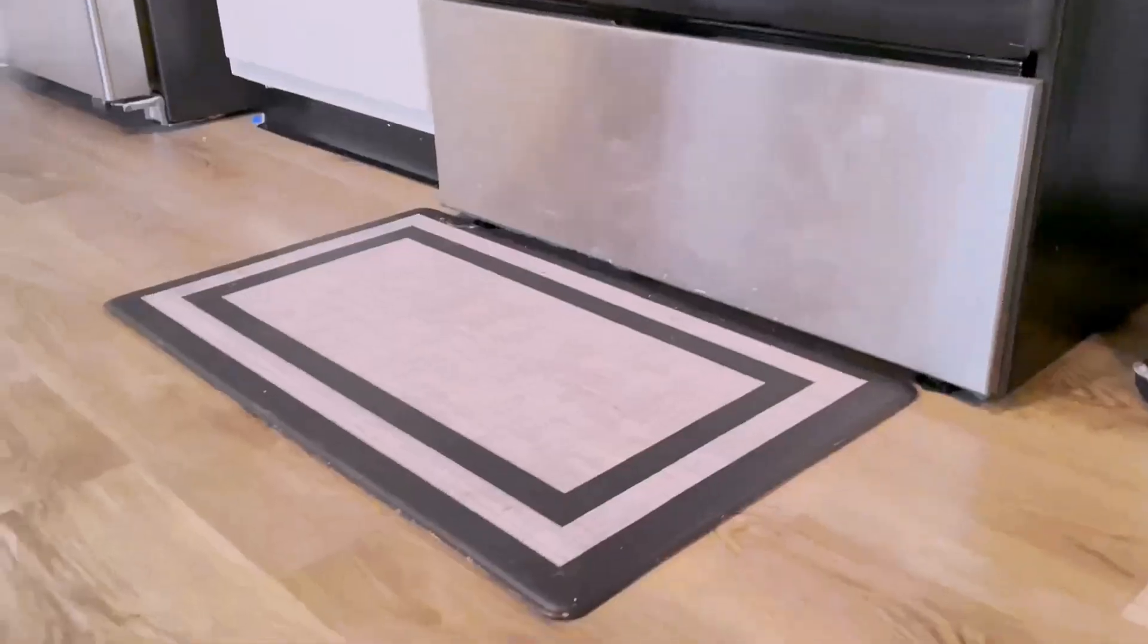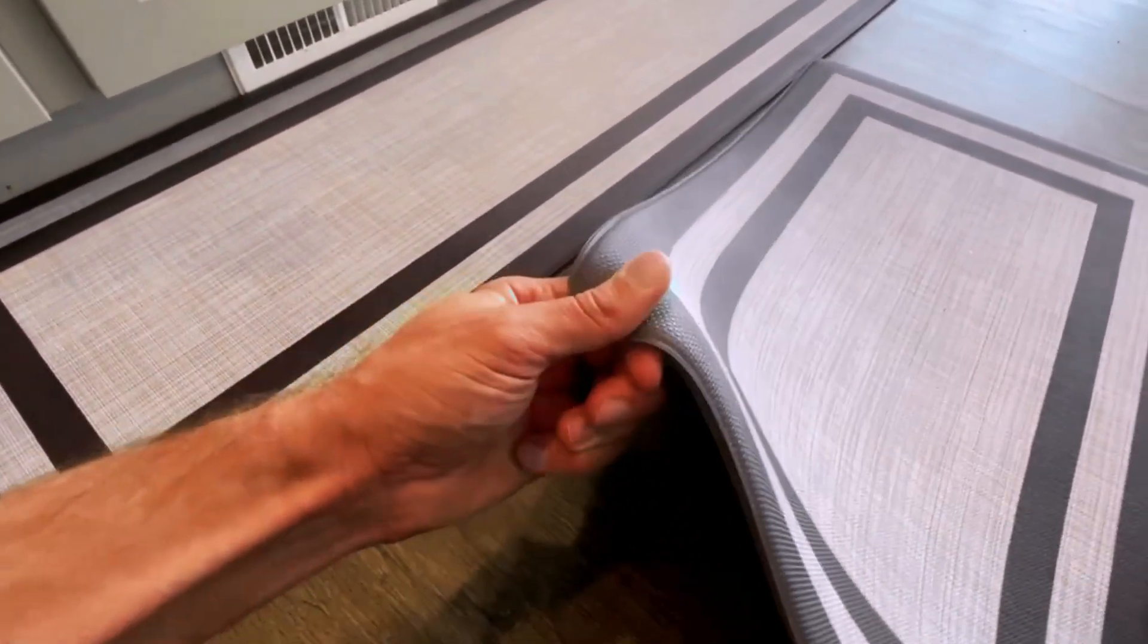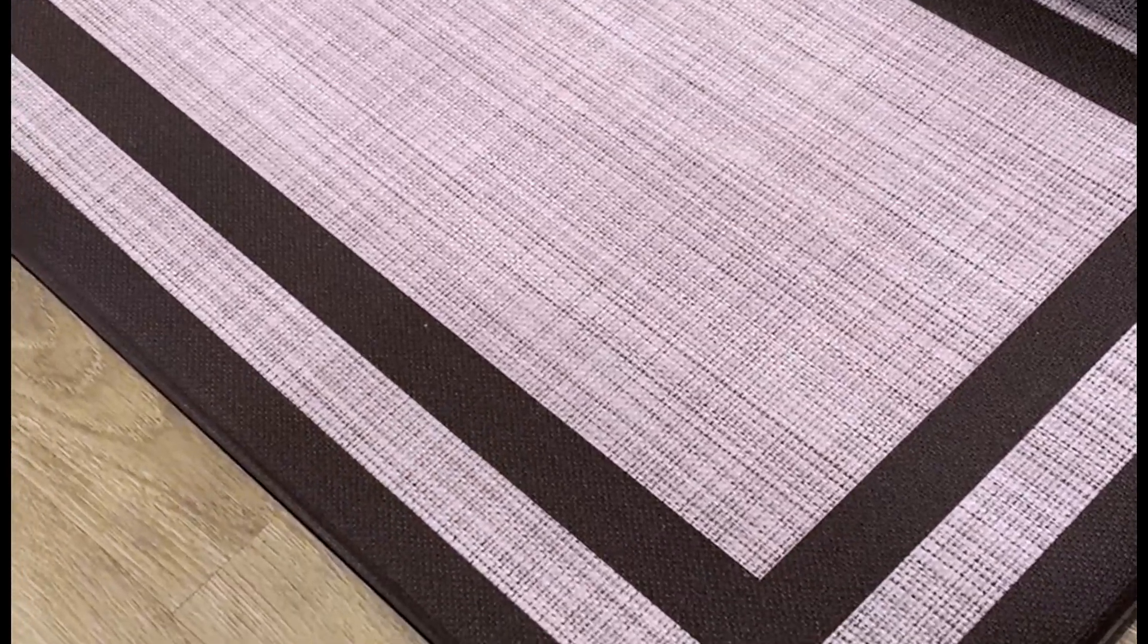One standout feature of these mats is their anti-fatigue properties, which help reduce strain on your legs and back. The non-skid bottom ensures that the mats stay securely in place, providing stability while you move around your kitchen.